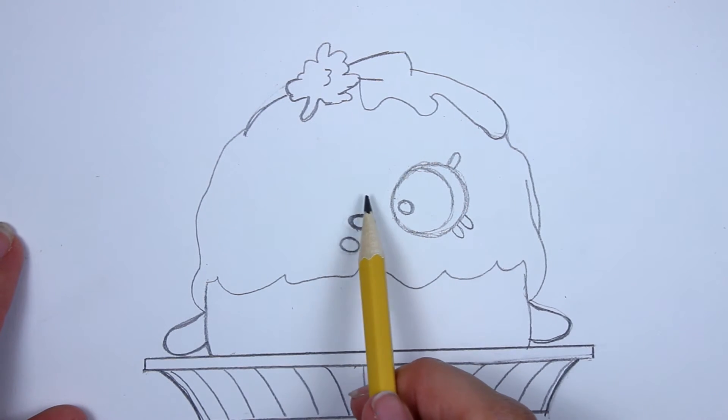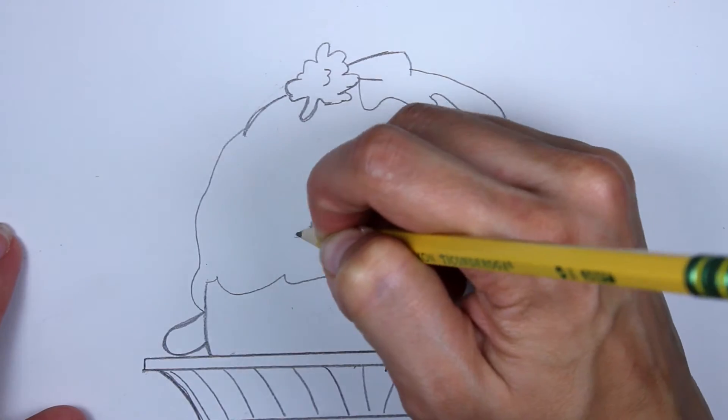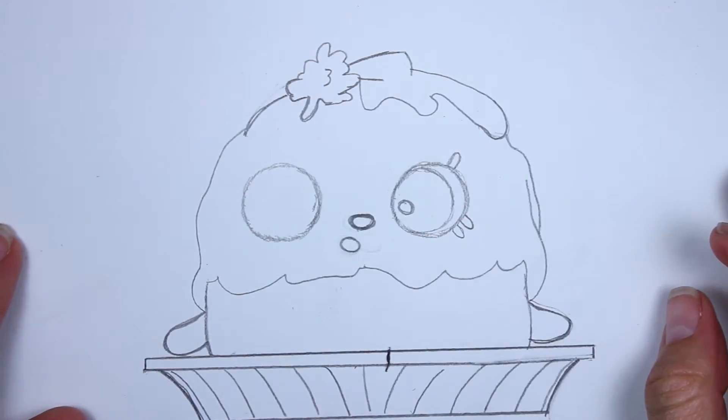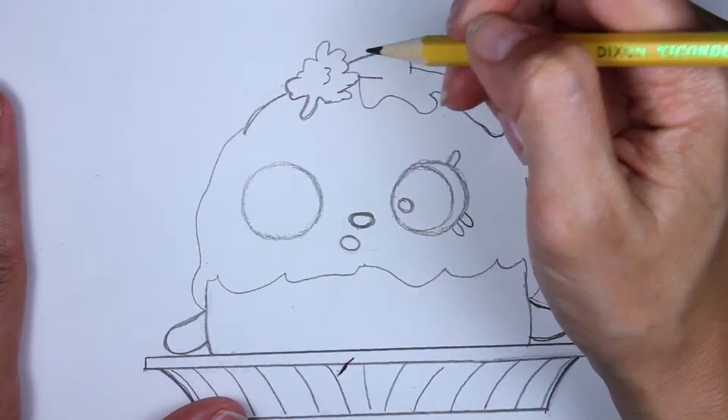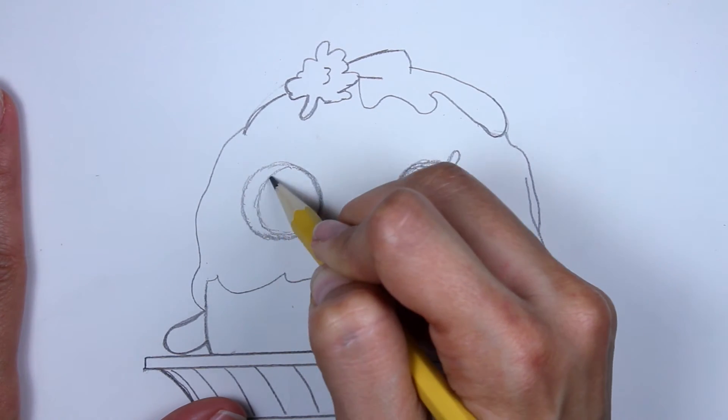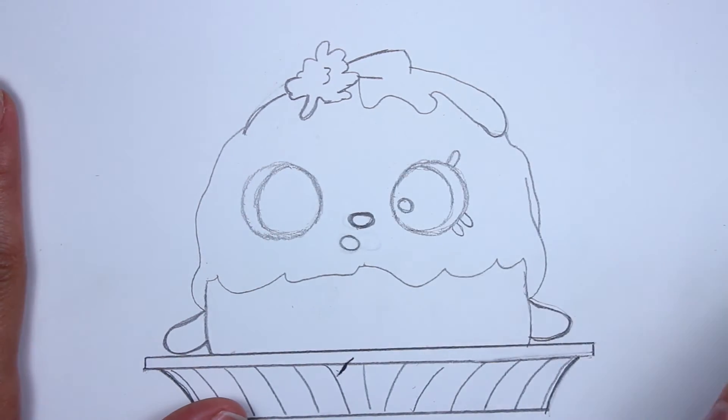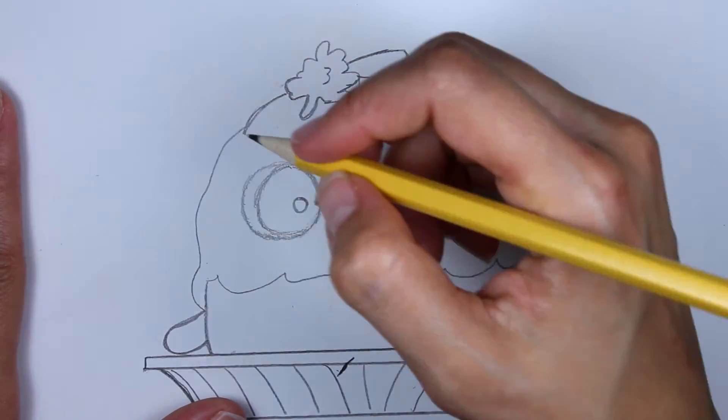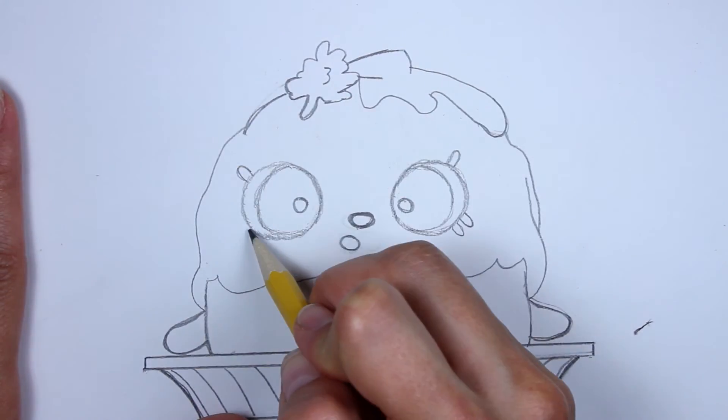And then his other eye, leave a space like this much, about this much, from the right eye and make a circle. Let me fix this up a bit. And then a semi-circle inside, and then a small circle on the inside for the pupil, followed by three eyelashes as well.